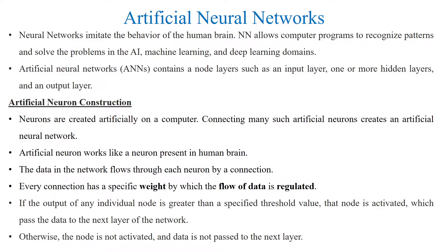Welcome to the Artificial Neural Network session. The Artificial Neural Network imitates the behavior of the human brain. Neural networks allow computer programs to recognize patterns of environment or objects and solve problems in artificial intelligence, machine learning, and deep learning domains.